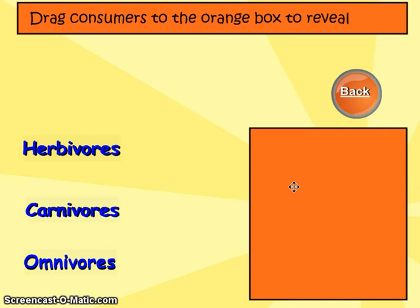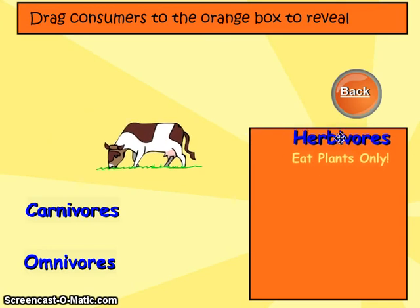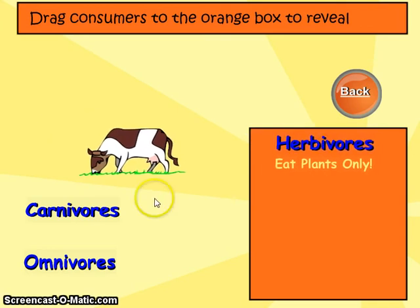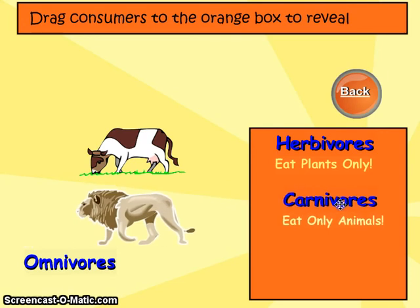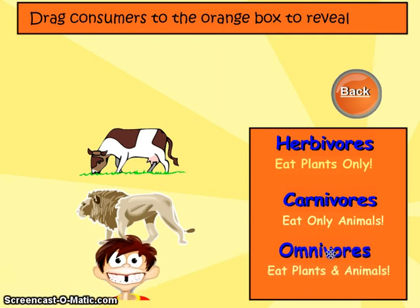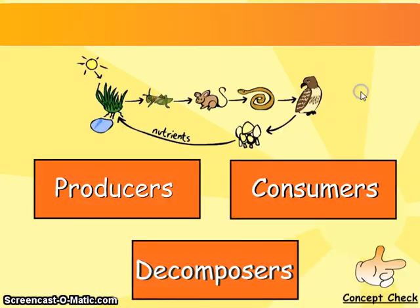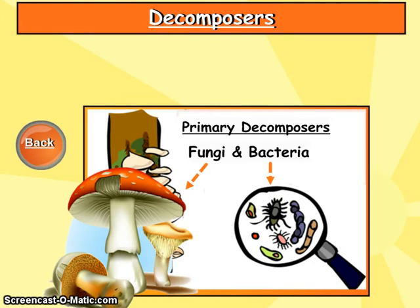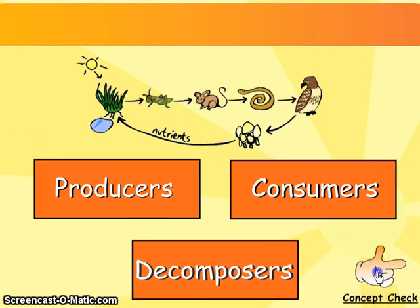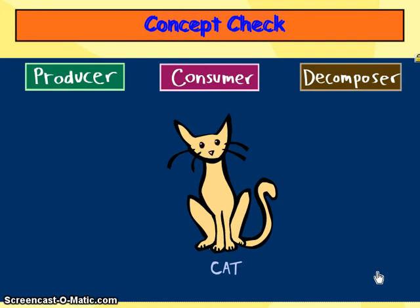Consumers are the animals that eat other things for energy. Herbivores eat plants to get energy. Carnivores eat only other animals to get energy. Omnivores, like us, eat both plants and animals to obtain energy. Decomposers — examples include fungi and bacteria.